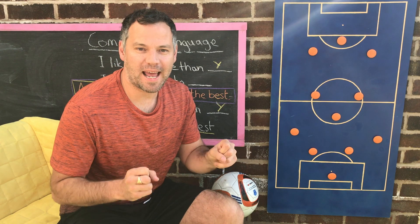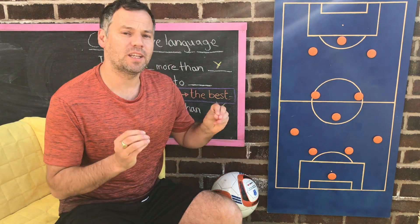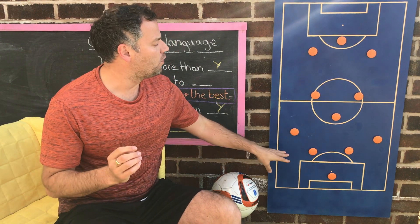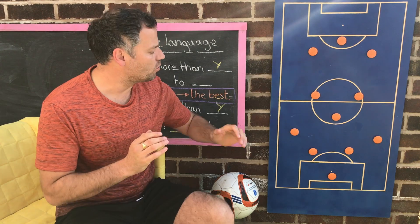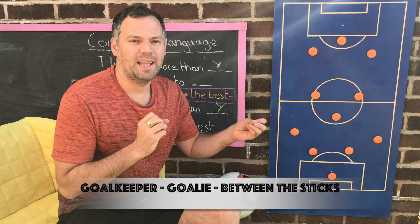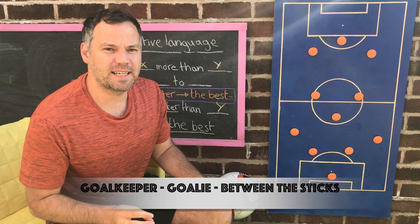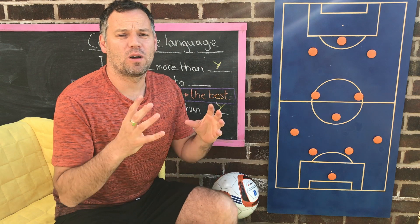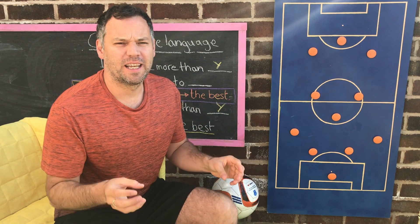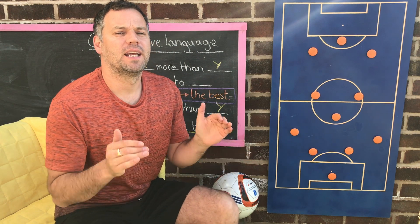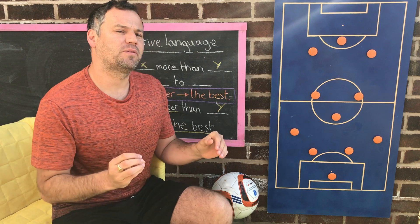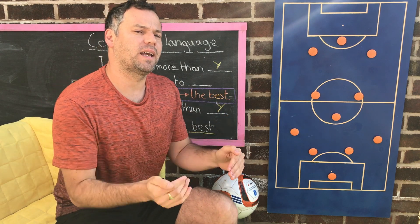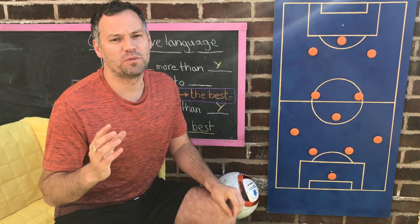Now, my team. My formation is 4-3-3. For goalkeeper — between the sticks — the two choices are Peter Schmeichel or Gianluigi Buffon. For me, Peter Schmeichel was very good, he was amazing in the Premier League. So in my team, I prefer Peter Schmeichel to Gianluigi Buffon.